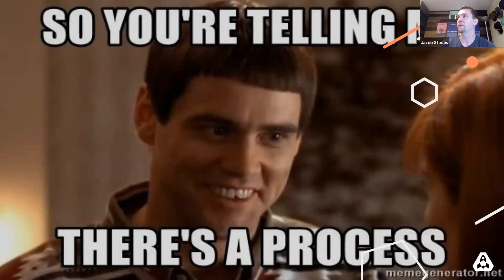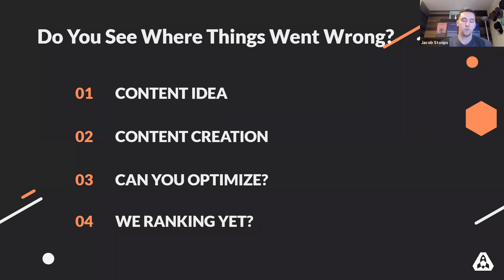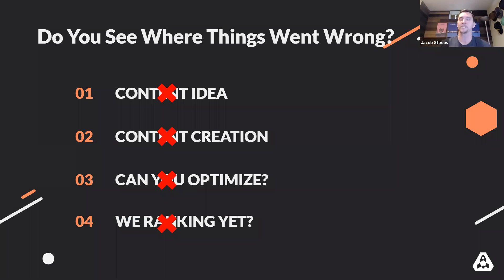So there is a process and we will get to that in just a minute. Can you see where things went wrong? All of those steps were wrong — all the way from ideation to 'are we ranking yet?' Having a content idea isn't inherently wrong, but if it's not based in data or doesn't have some metric aligned to why you're creating that piece of content — if you're just creating content for content's sake — that's probably not a great idea. If you don't involve SEOs in the process and SEO is one of your core KPIs, that's probably a miss as well.